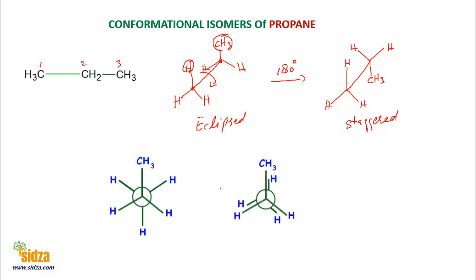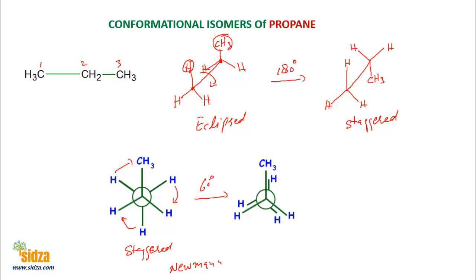We can also draw these two conformational isomers of propane in the Newman projection. In the Newman projection, this is a staggered conformation. If you do a rotation of just 60 degrees around the bond, you get an eclipsed conformation.